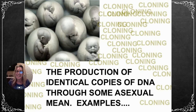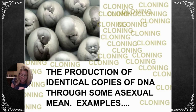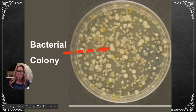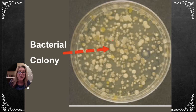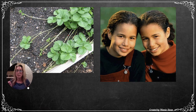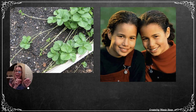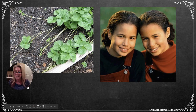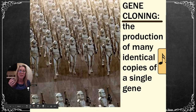Now let's start talking about cloning. Cloning is the production of genetically identical copies of DNA, cells, or organisms through asexual means. Cloning happens all the time — when you grow bacterial colonies, each colony came from just one bacterium reproducing again and again. A strawberry plant's runners can grow a clone if covered with soil, and potato eyes can grow clone potatoes. Identical twins are essentially clones.